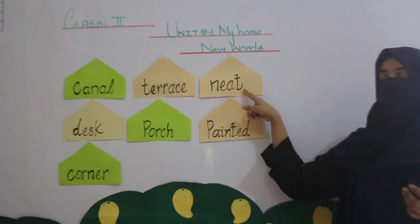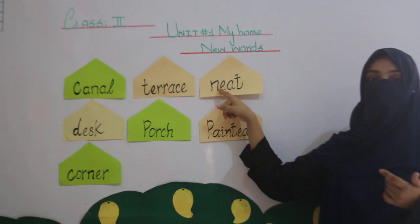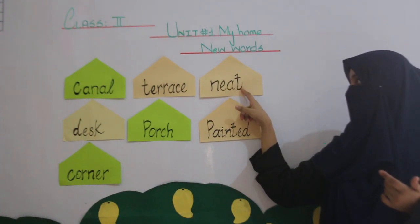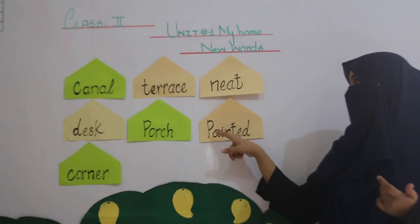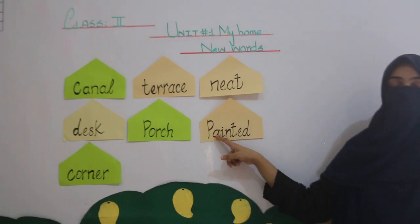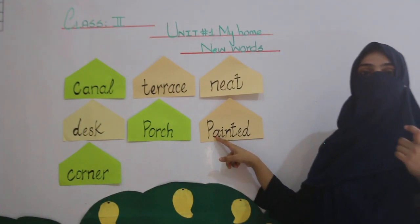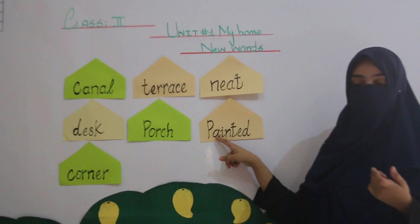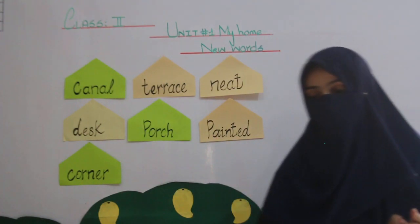Number six word is Neat. N-E-A-T, Neat means Saaf Sutra. Painted — painted, you know that. Aap ko paint karte hain colors se. With the help of colors, you will paint anything.